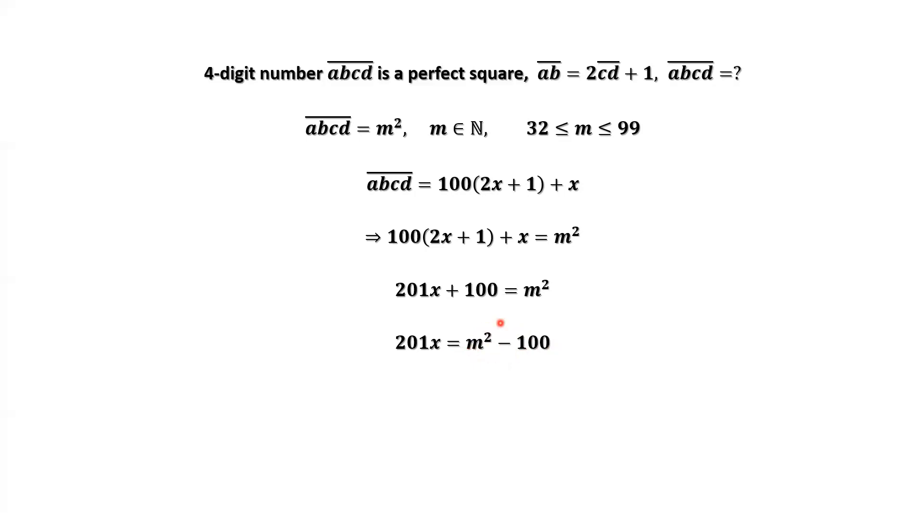We can factor the right-hand side and also decompose the left-hand side. 67 times 3X equals M minus 10 times M plus 10. So this is an important result because 67 is a prime.